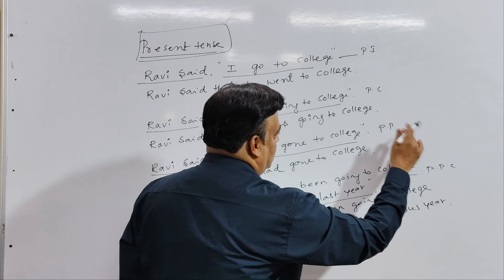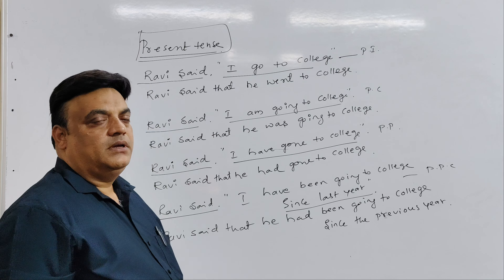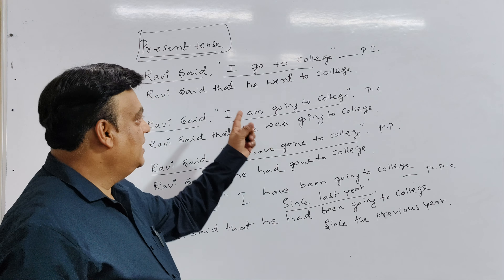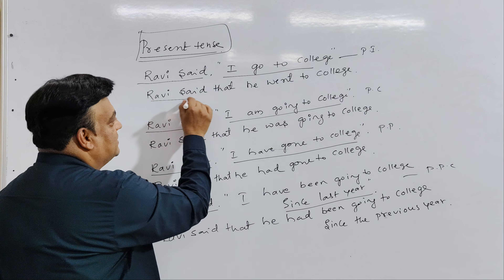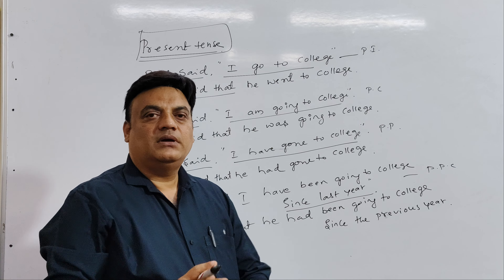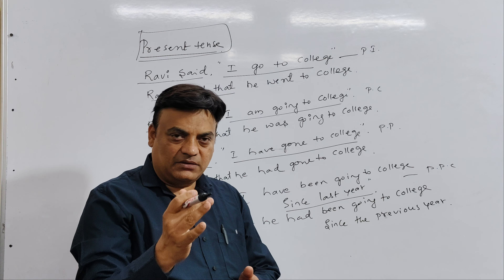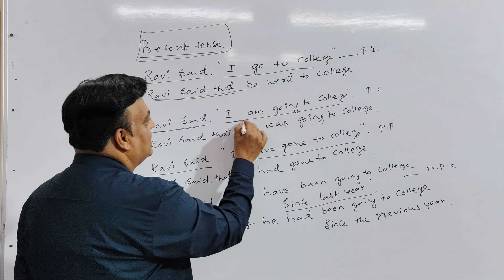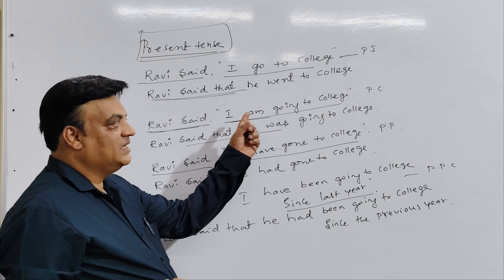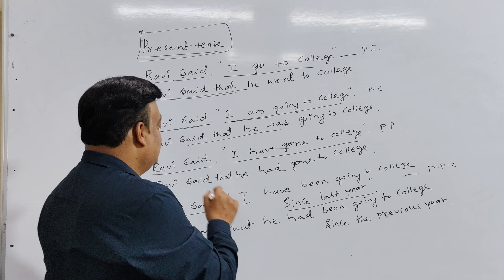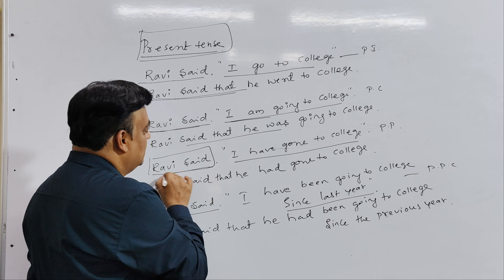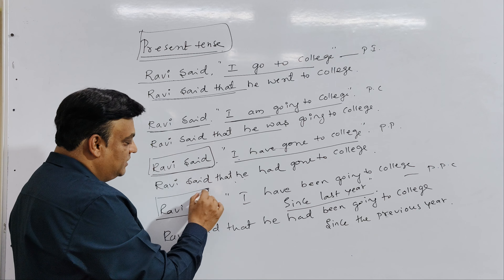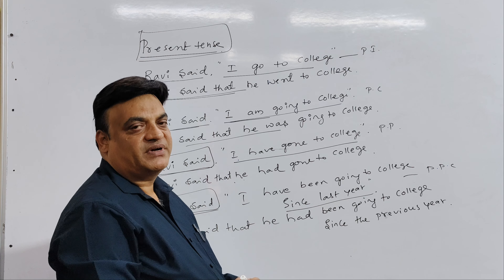This fourth one is present perfect continuous tense. Now remember the rules: present indefinite changes into past indefinite, present continuous changes into past continuous, present perfect changes into past perfect tense, and present perfect continuous changes into past perfect continuous tense.